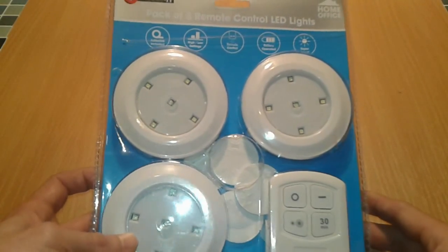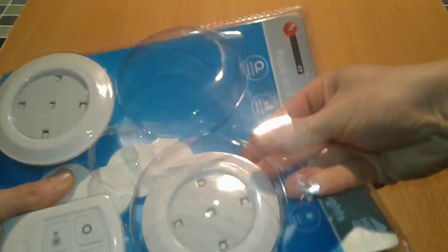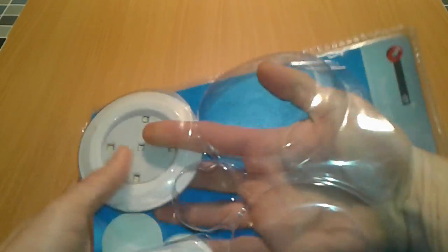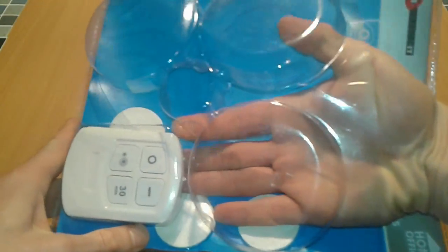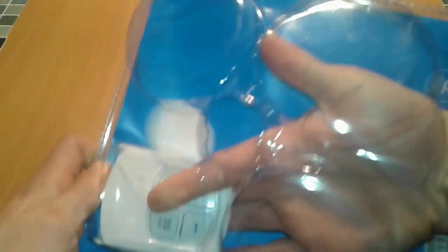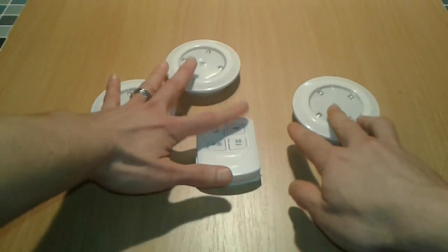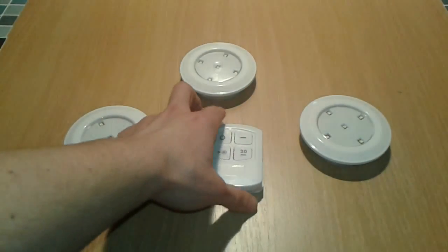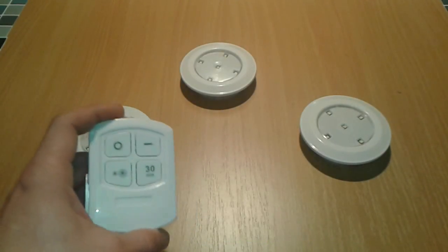Alright, so let's open it up. I managed to cut this one over here. So we got 3 lights, some double sided tape and a remote. A radio remote control. This is our guinea pig for today. So it's a radio remote control, 4 lights and we will see if we gonna need something else.